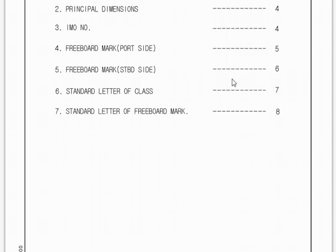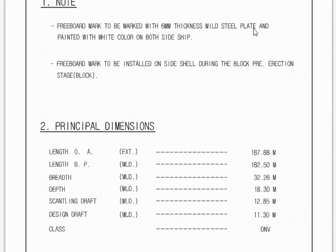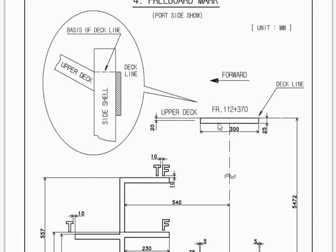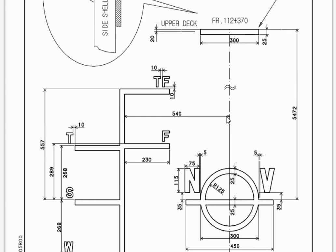This is the freeboard mark plan. You see here they give some principal dimensions: the length overall, breadth, length between perpendiculars, etc. They explain about the freeboard mark from the port side. This drawing is very clear.